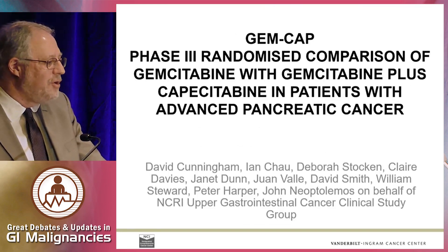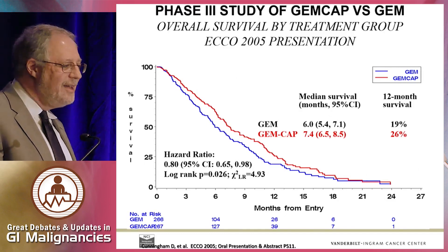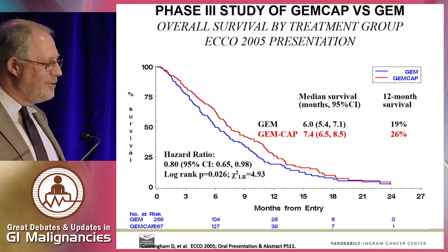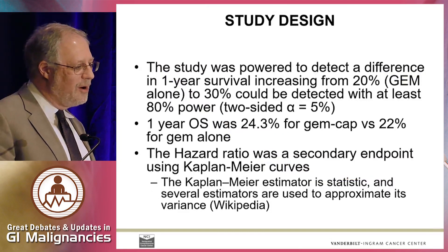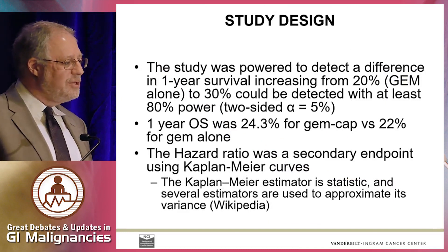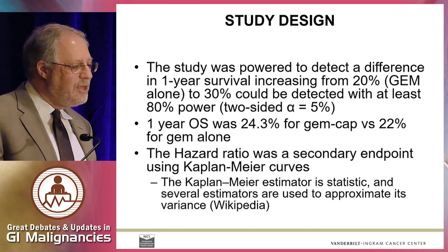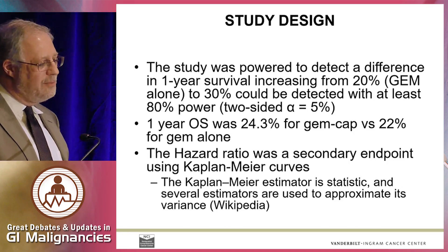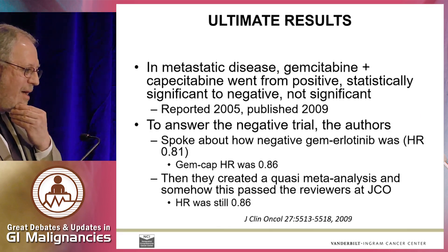So let me show you the GemCape randomized trial upon which this was built. This was the metastatic disease setting. And for those of us who remember this presentation at ASCO 2005, GemCape was statistically significantly positive. And we never saw the final data — I should say we didn't see the data — for five more years or more, actually. This study was powered for a certain finding. Hazard ratio was a secondary endpoint. They were actually looking at one-year overall survival as their primary endpoint. They don't mention that much in the papers. They kind of avoid that.